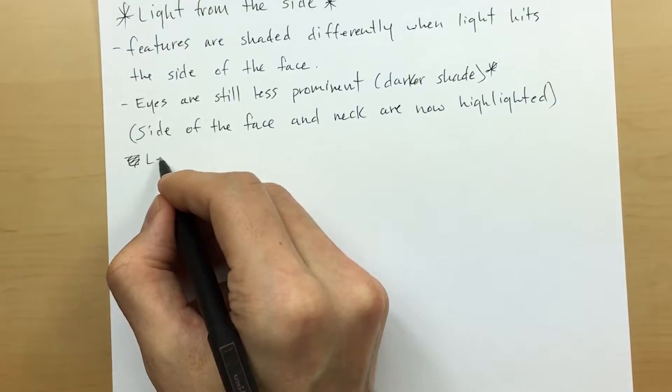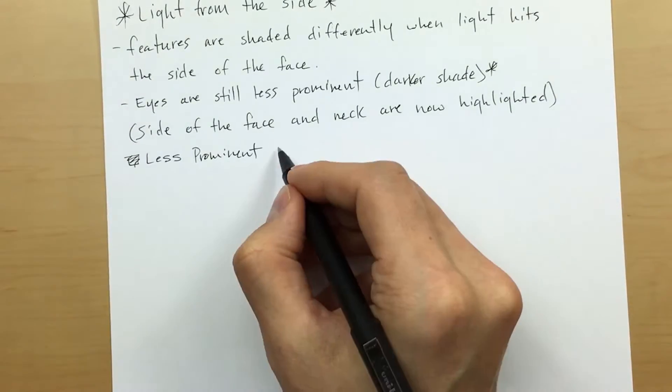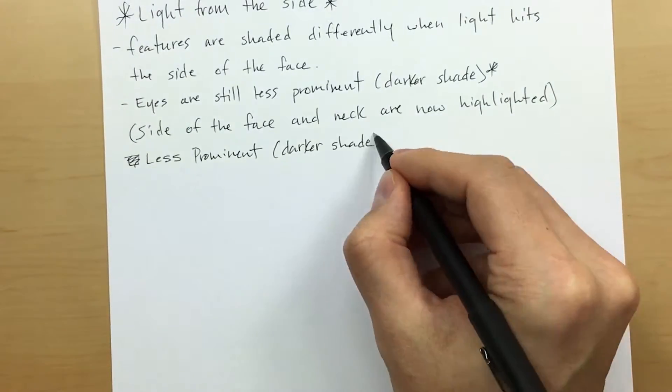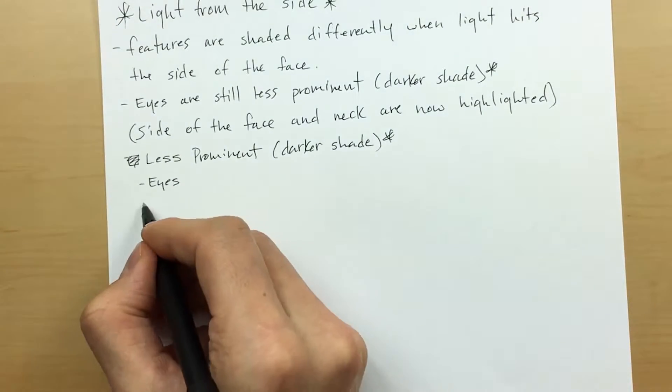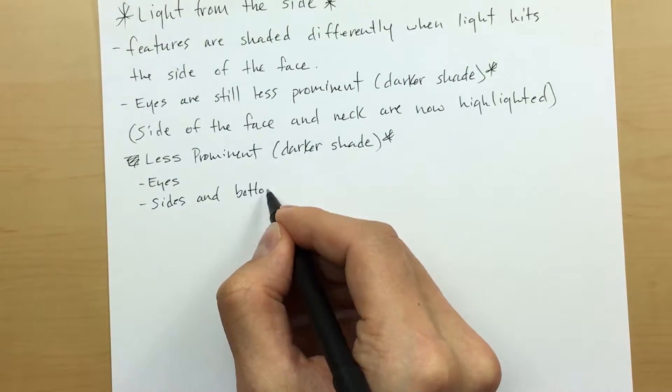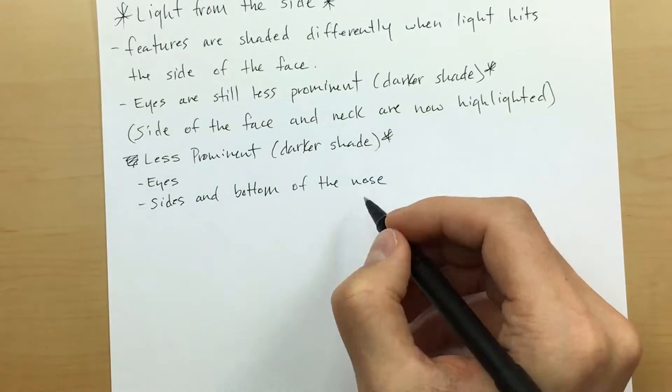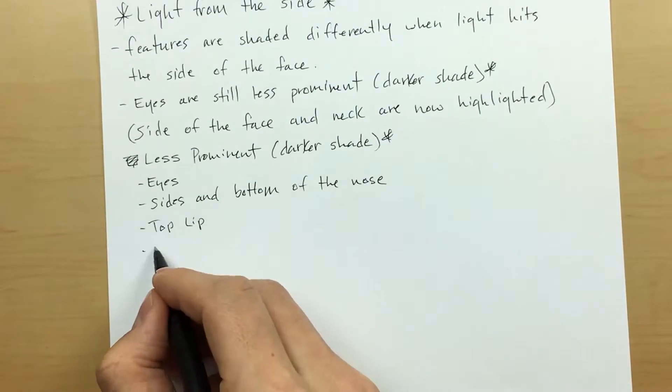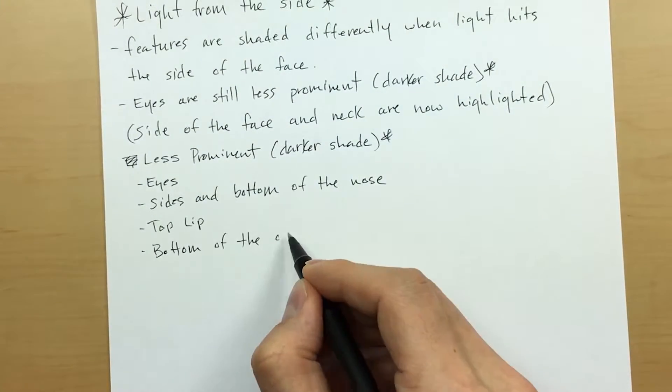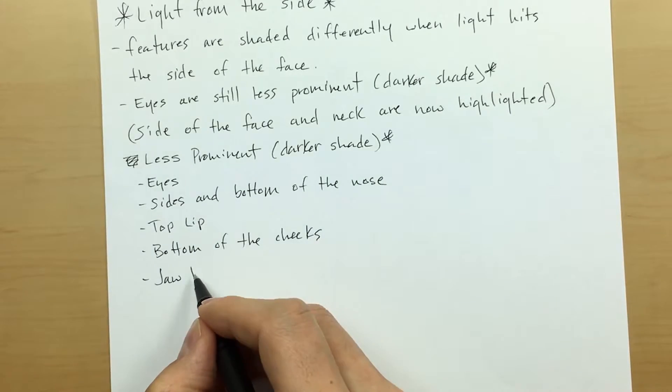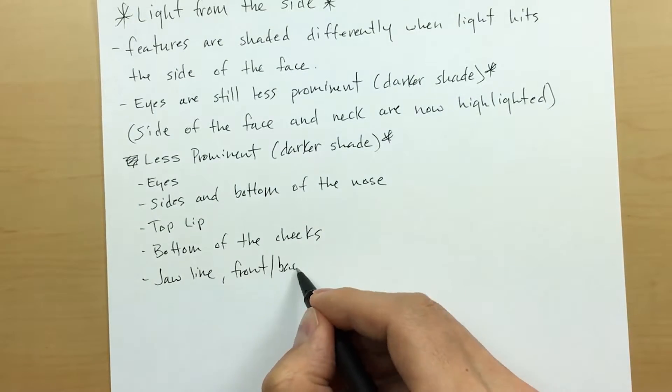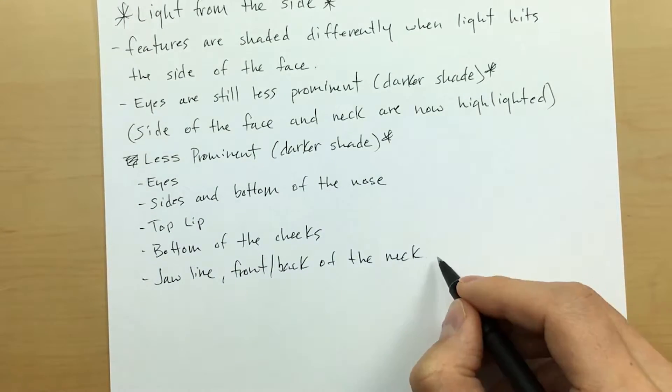Now the key point that I want you to focus on is that the less prominent, also known as the darker shades, are still going to be the eyes, the sides and the bottom of the nose, the top lip, the bottom of the cheeks, as well as the jawline, the front and back of the neck, and the back of the head.